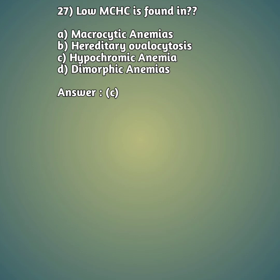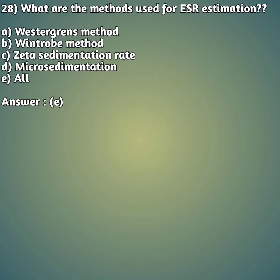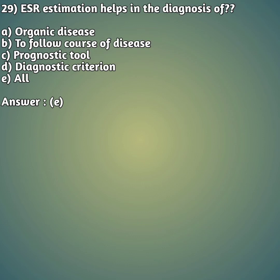Question 28: What are the methods used for ESR estimation? Option A: Westergren's method, option B: Wintrobe's method, option C: zeta sedimentation rate, option D: micro sedimentation, option E: all. The right answer is option E, all. All of these methods are used for erythrocyte sedimentation rate (ESR) estimation.